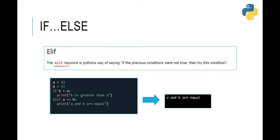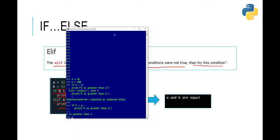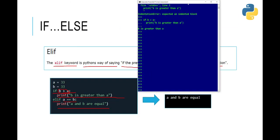Now let's look at another keyword: 'elif'. This is a Python-only keyword — it's Python's way of saying 'if the previous conditions were not true, then try this condition'. In this example: if b is greater than a, do this. If this condition is false, then we go to elif and check another condition. If that condition is true, we will execute that line. Let's try this example in our Anaconda prompt. We have a equal to 33 and b equal to 33 as well.